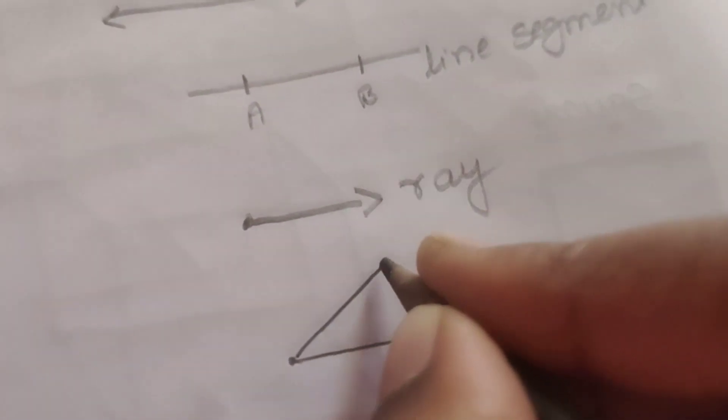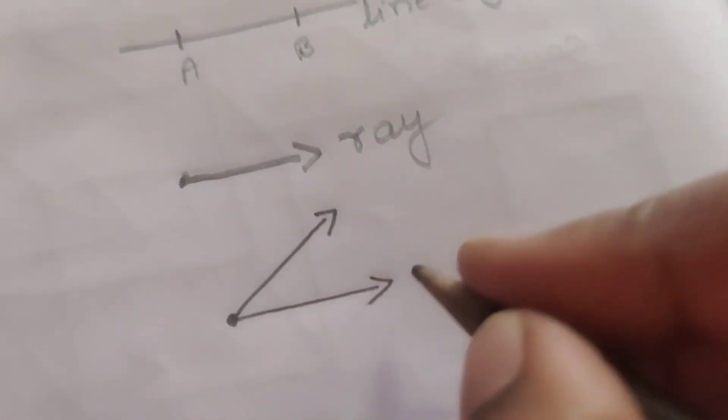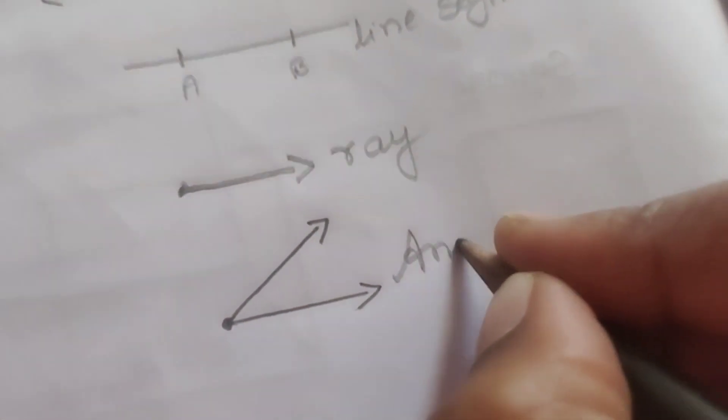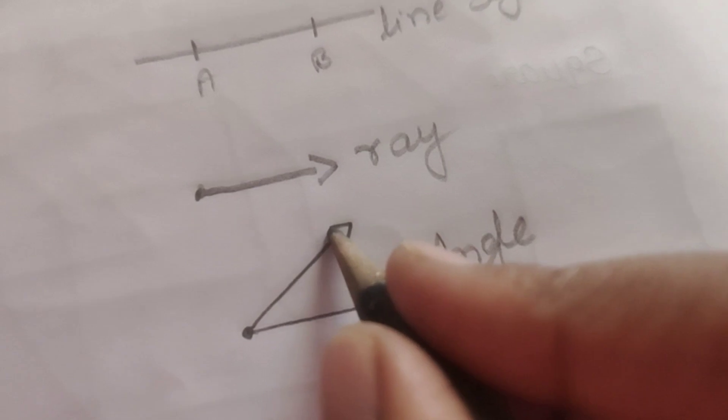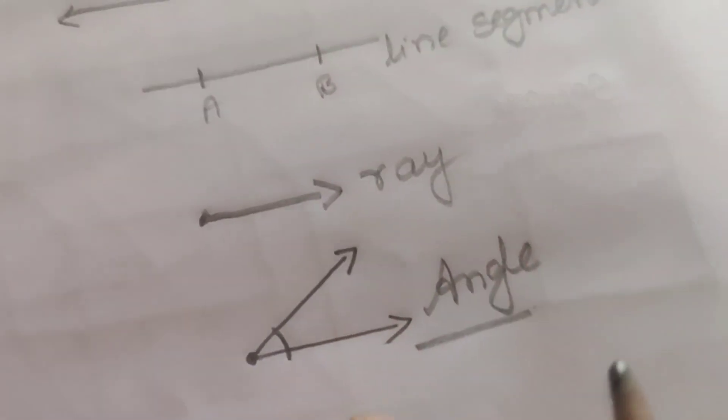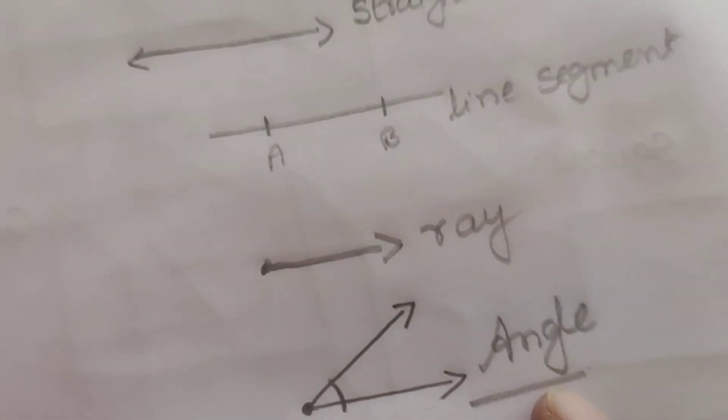If two rays are meeting at a point, this is called an angle. So what is the definition of an angle? The distance between two rays is called an angle. So in this class we will learn more about angles.